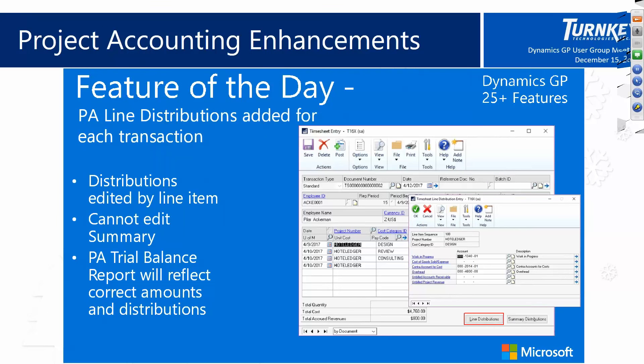On the project accounting side, PA line distributions have been added for each transaction. When you're doing individual lines on a timesheet entry, you can now get into the lines of that timesheet and work with the GL accounts in there. A button has been added to get into the line distributions and adjust the GL accounts if needed on those lines. Previously it was always tied to the cost category itself, but now you can make changes by individual transaction.